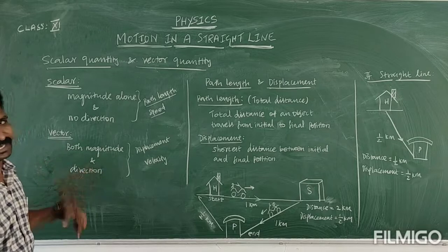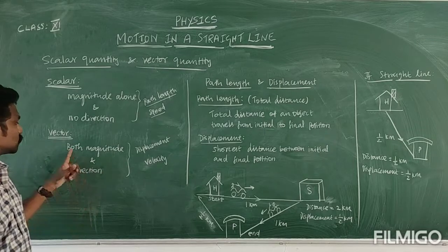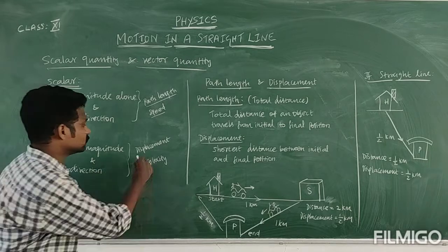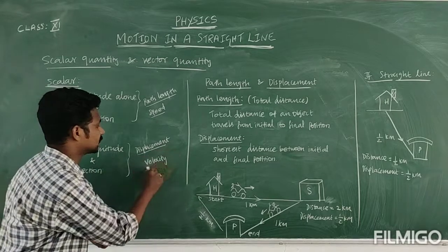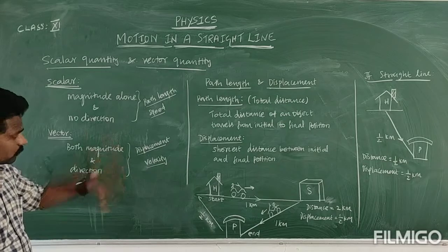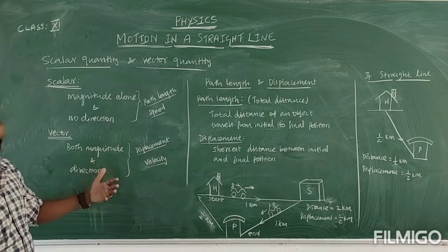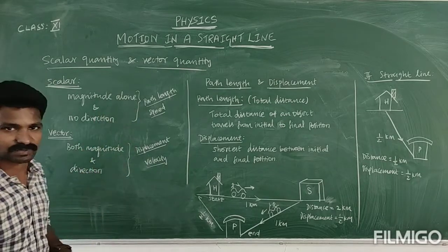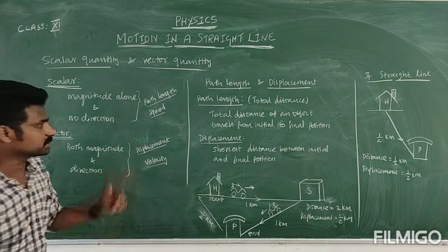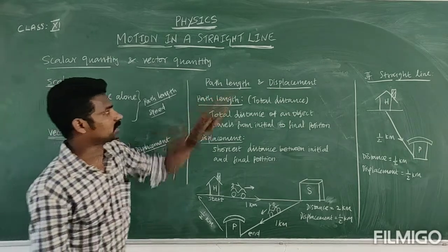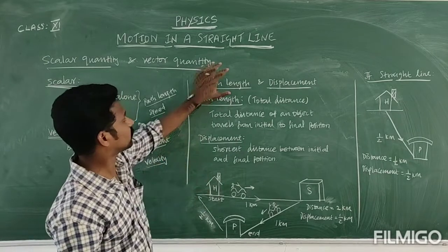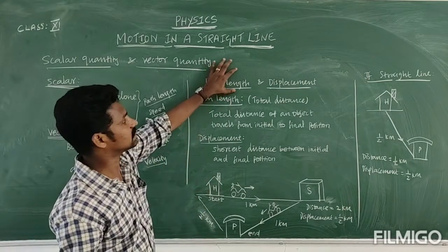The vector quantity has both magnitude as well as direction. For example, displacement and velocity. Now I am going to explain path length and displacement. Path length is an example of scalar quantity, and displacement is an example of vector quantity.